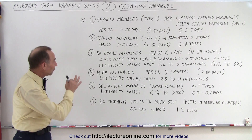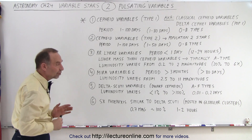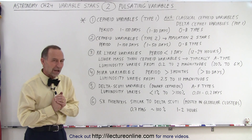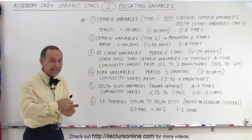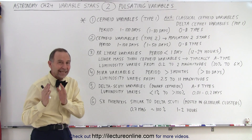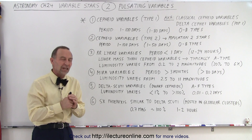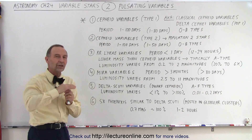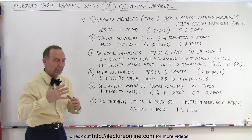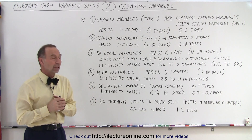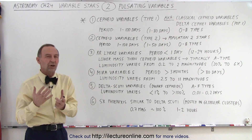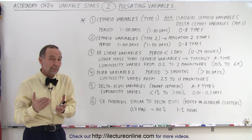All of these variable stars are part of the asymptotic giant branch of stars, meaning they're now all red giants. They're beginning to be at the end phase of the red giant stage — they've moved off of the horizontal branch, they're now in what we call the instability strip, and they're beginning to pulsate. The way they pulsate has a lot to do with what type of star they were when they were on the main sequence.